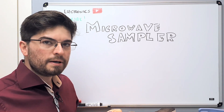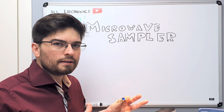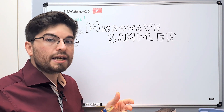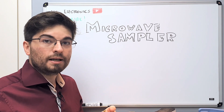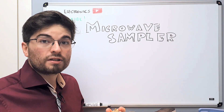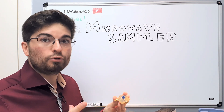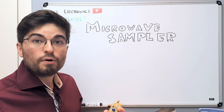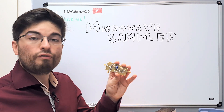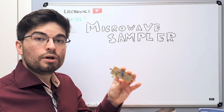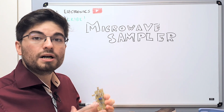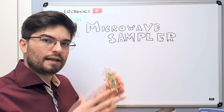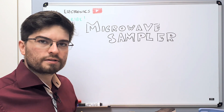A sampler is like a mixer that works by harmonic multiplication, but it works in the time domain. Working in the time domain enables us to down-convert a signal using a much lower frequency LO. Let's see how it works.